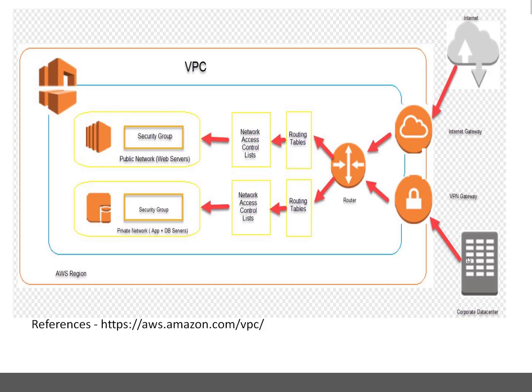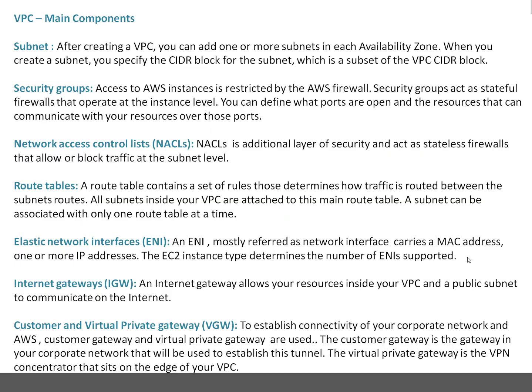What are the main components of VPC? The first is the subnet. After creating a VPC, you can add one or more subnets in each availability zone. When you create a subnet you specify a CIDR block for that subnet, which is a subset of the VPC's CIDR block. Based on the number of systems in that subnet, you can decide whether it will be /16 or /28.